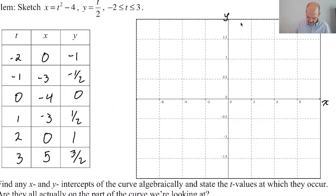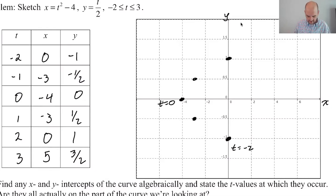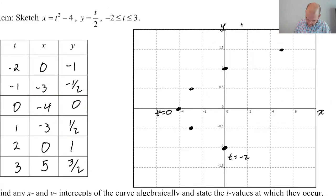All right, so we got to plot these. That's annoying. So 0, negative 1 is here. So that's where we are, t equals negative 2. And then negative 3, negative 1 half, I guess we'll be here. Negative 4 is 0. Let's say that that's at t equals 0. And then you're going to get some symmetry here. Negative 3, positive 1 half, 0, positive 1, and then 5, 3 halves. Oh my gosh, I'm reading that wrong. So here, it wasn't going to fit on the graph. I was like, something's not right. And it was me.